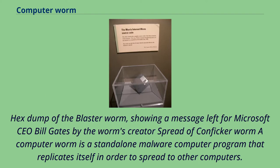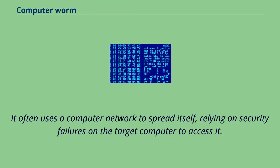Hexdump of the Blaster worm, showing a message left for Microsoft CEO Bill Gates by the worm's creator. Spread of Conficker Worm A. A computer worm is a standalone malware computer program that replicates itself in order to spread to other computers. It often uses a computer network to spread itself, relying on security failures on the target computer to access it.